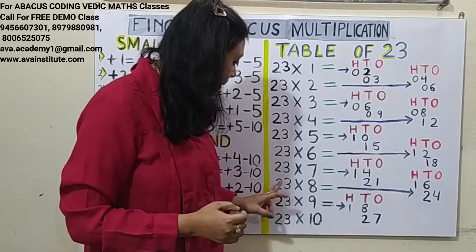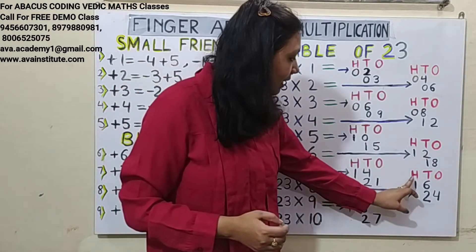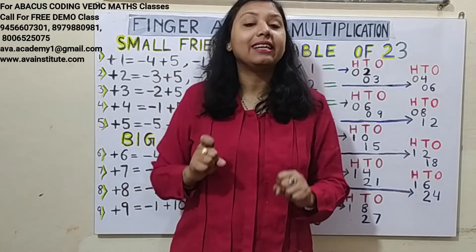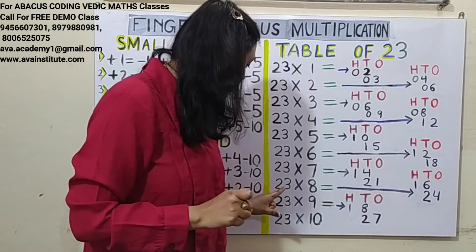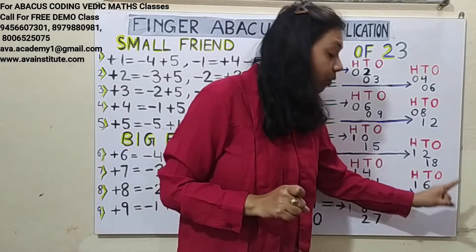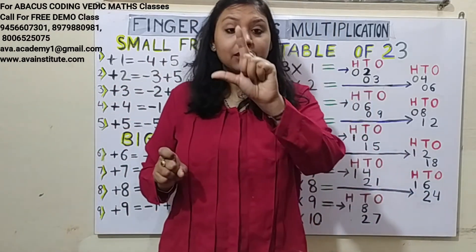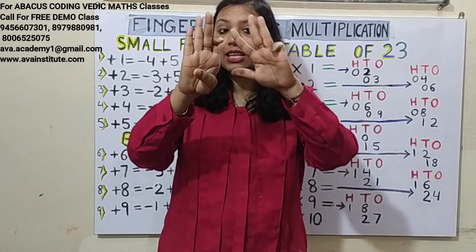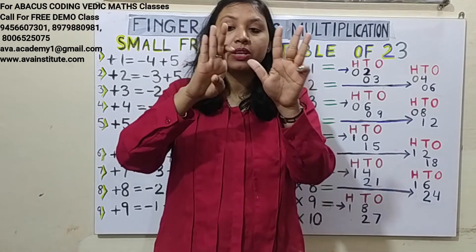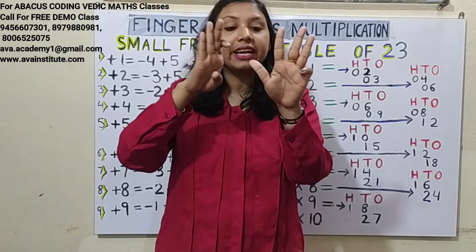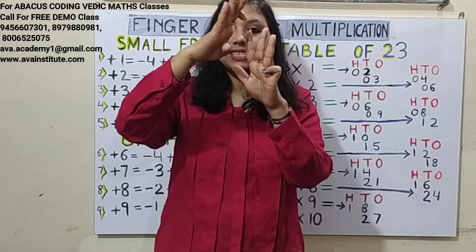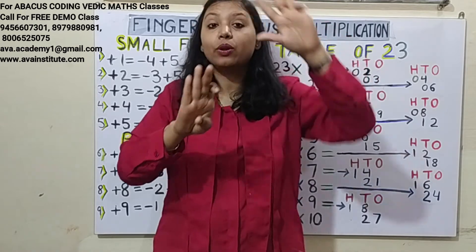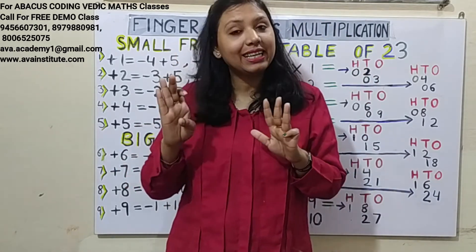23 × 8: 2 × 8 = 16, in 100's: 1, in 10's: 6. 3 × 8 = 24, so add 2 in 10's and 4 in 1's. 100's = 1, 10's = 80, 1's = 4. Answer is 184.